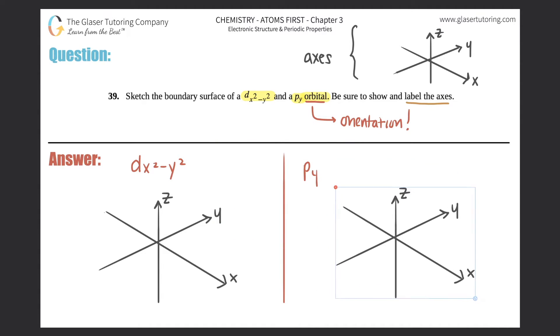Let's do the py first because it's easier. We should always start easy and then work our way up. Now they want specifically the py, so that means that the orbitals would be lying on the y-axis. So all you got to do is find the y-axis and that's here.